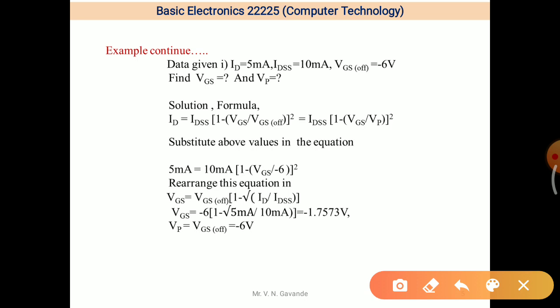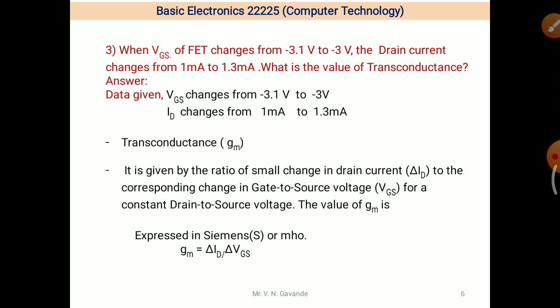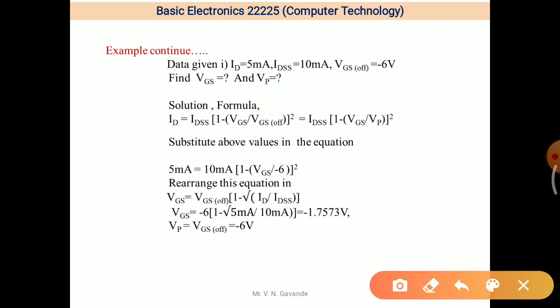Use this equation. Data is given, just put the values or substitute the values of ID, IDSS, and VGS OFF. So we will get VGS in terms of other quantity. So rearrange this equation. The equation is rearranged like this: VGS is equal to VGS OFF in bracket, 1 minus square root of ID upon IDSS. Then put the values of all the given data into this. And so you will get, after calculation, minus 1.7573.